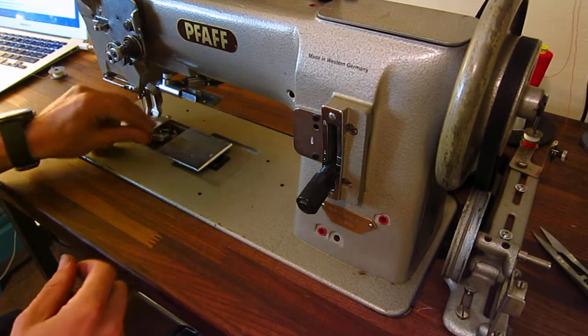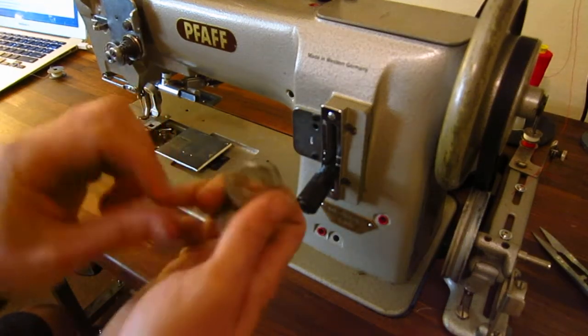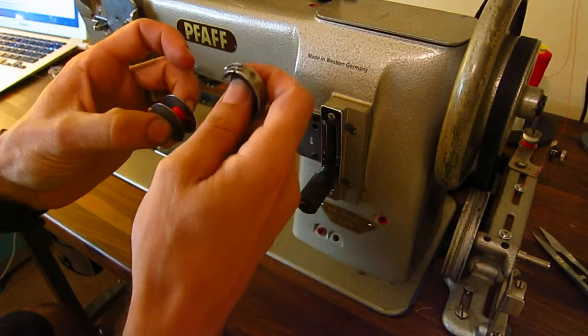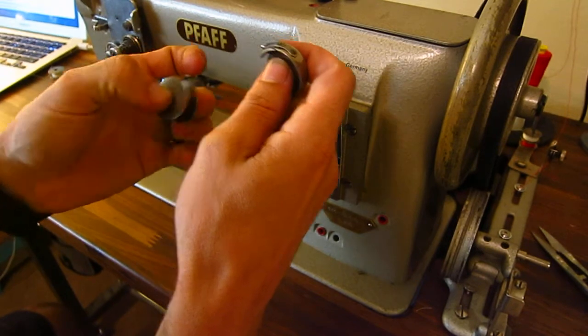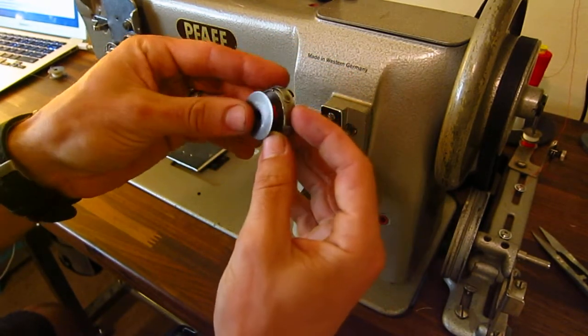Basically you're going to flip that lever up, pull the cap out. And what you're going to want to do is, you want the thread, the rotation of the actual bobbin to go clockwise.